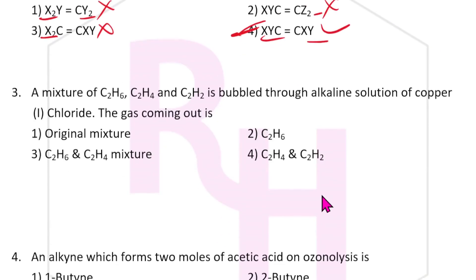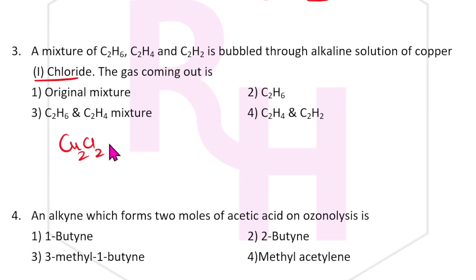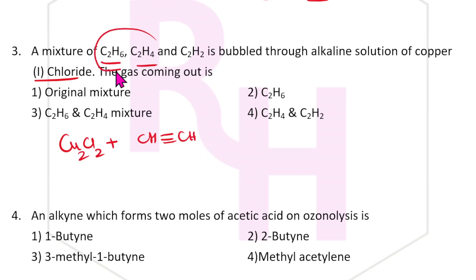A mixture of C2H6, C2H4, and C2H2 is bubbled through alkaline solution of copper chloride (CuCl). Because it's in dimer state, it reacts with alkyne only — C2H6 and C2H4 will not react. The unreacted gases coming out are the answer. So the answer is the third one.